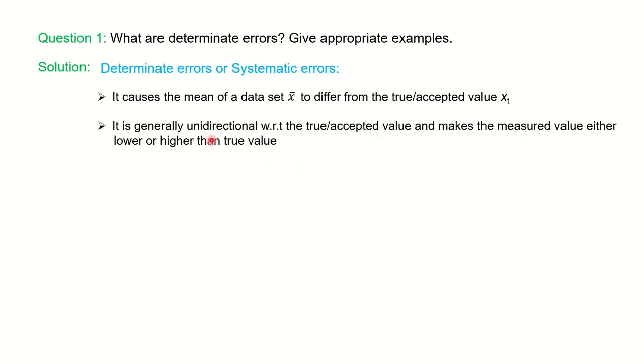It is generally unidirectional with respect to the true value, means it may be higher or it may be lower than the true value. And these errors can be avoided or corrected easily.